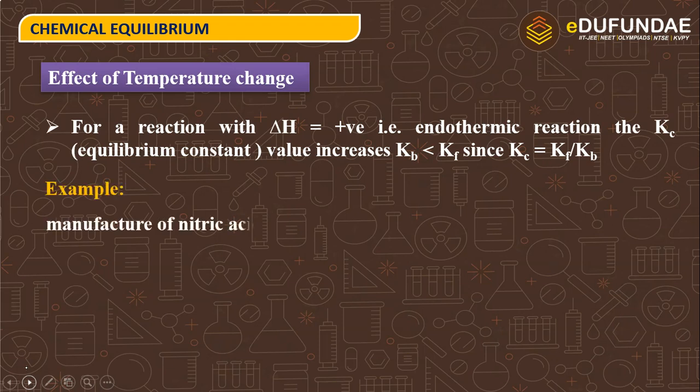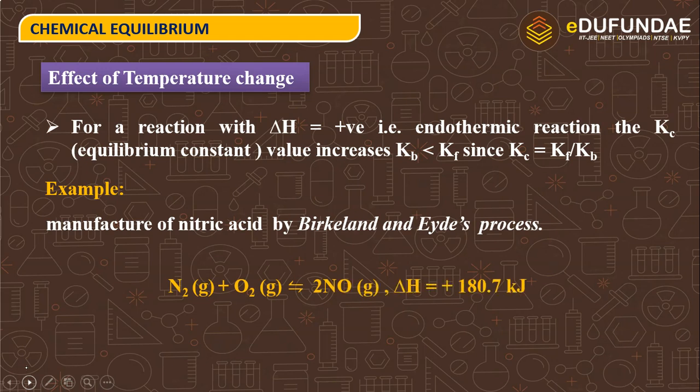Example: Manufacture of nitric acid by Birkeland and Eyde process. N2 plus O2 reversible 2NO, delta H equals positive 180 kJ.